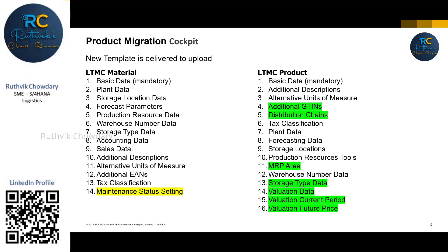The major difference you can identify is at sheets 14, 15, and 16 — that is valuation data, valuation current period, and valuation future period. These are not entirely new; previously all that data was included in a single sheet in the material template called accounting data. But now it has been differentiated into three separate sheets.